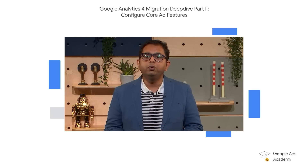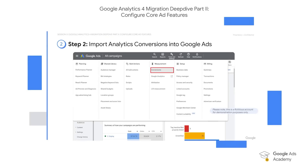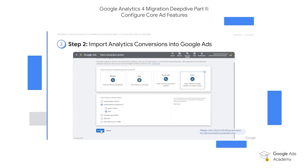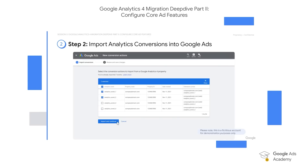Now that we have created conversions in GA4, the next step is to import analytics conversions into Google Ads. Go to the Google Ads interface and click on Tools and Settings, then select Conversions. In the next view, click on Summary and select new conversion action. In the view which will open up, click on Import GA4 properties and select web options. Click to continue. In the next view, you will be able to see all GA4 conversions linked to this account. Please select the ones which you wish to import to Google Ads.